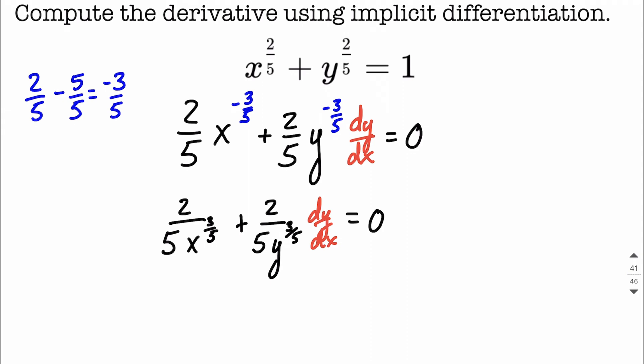Now a little bit of rearranging. Remember, the end goal here is get dy dx on one side by itself. So the next thing I'm going to do is move the term that has the x. So I'm going to keep the 2 over 5y to the 3 fifths dy dx on the left-hand side, and I'm going to go ahead and subtract the 2 over 5x to the positive 3 fifths. That's going to move over to the right-hand side by subtracting it over.